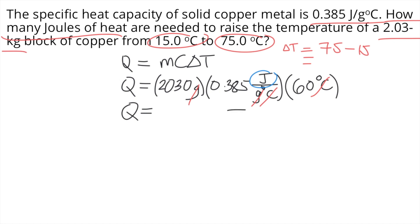Now all you have to do is grab your calculator and solve for Q. That's 2,030 times 0.385 times 60, and that is equal to 46,893 joules.